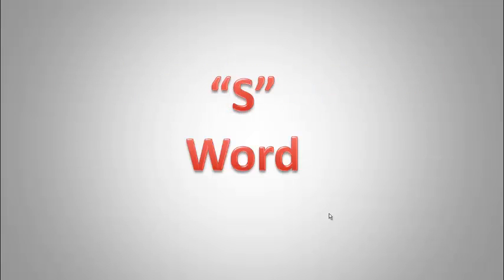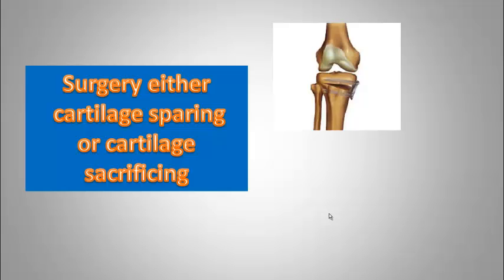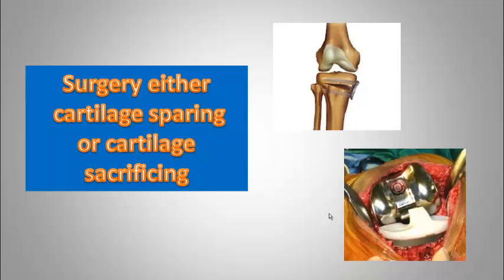Now let's talk about the S-word. Surgery is defined as being cartilage sparing or cartilage sacrificing. Cartilage sparing procedures involve osteotomy, removing a wedge of bone in order to line the joint straighter. This is used in young adult patients to buy time. Cartilage sacrificing procedures refer to joint replacement. The trend recently has been for patients to get these operations done at a younger age.